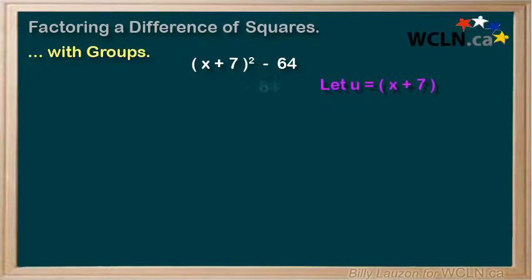This would give us u² - 64. Well, u² is u times u and 64 is 8 times 8. So we can set up our brackets. We can put a u in the front of each bracket and an 8 in the back of each bracket. Make one positive and one negative.